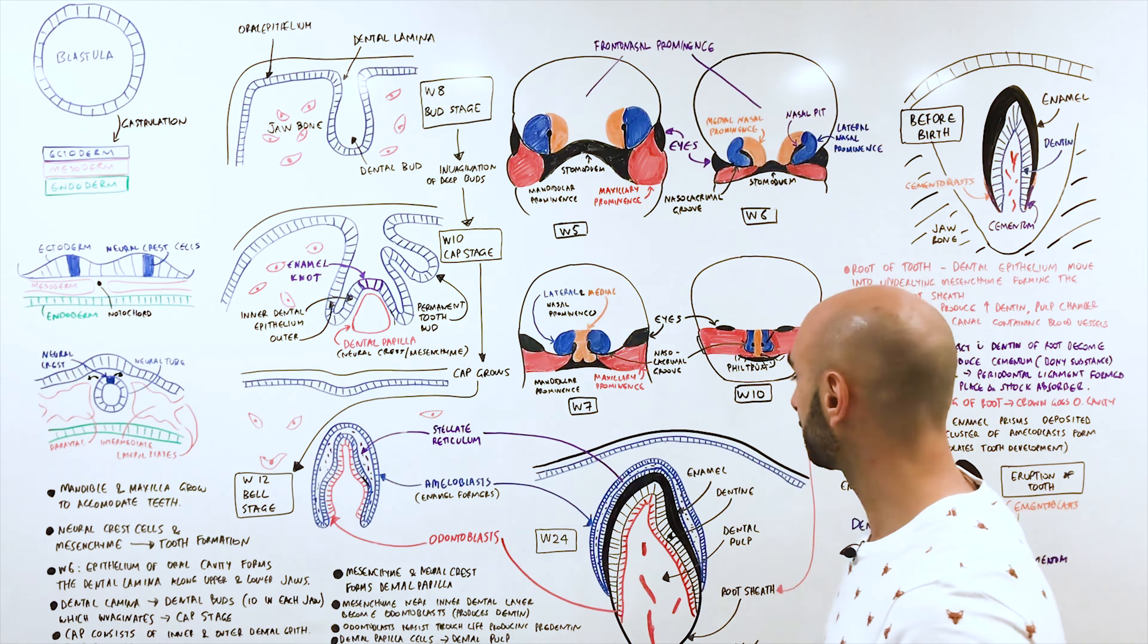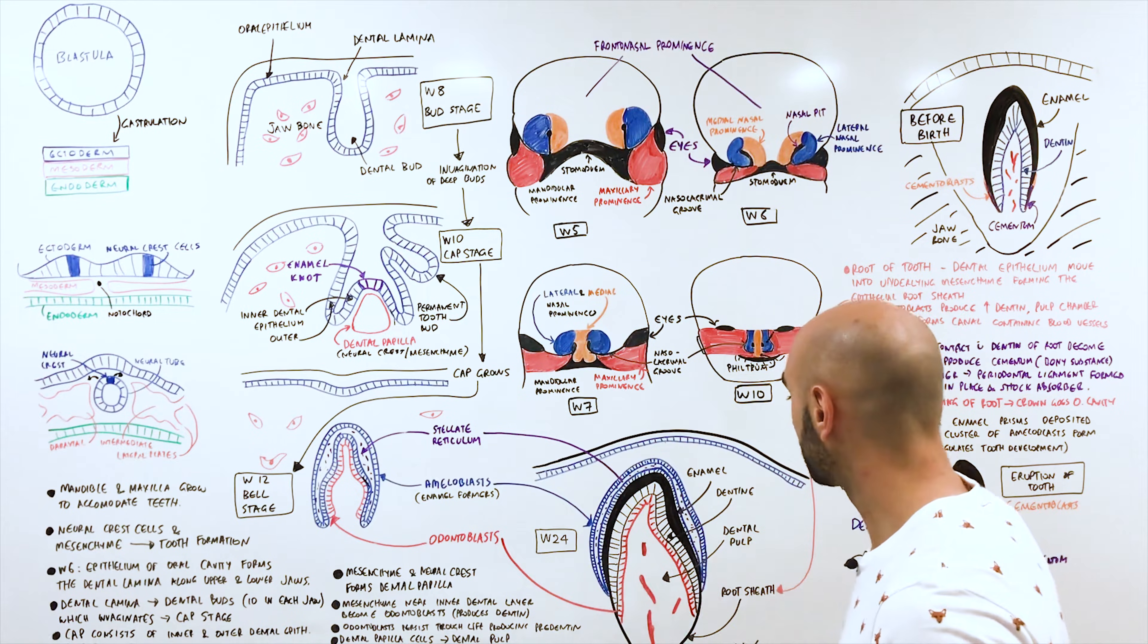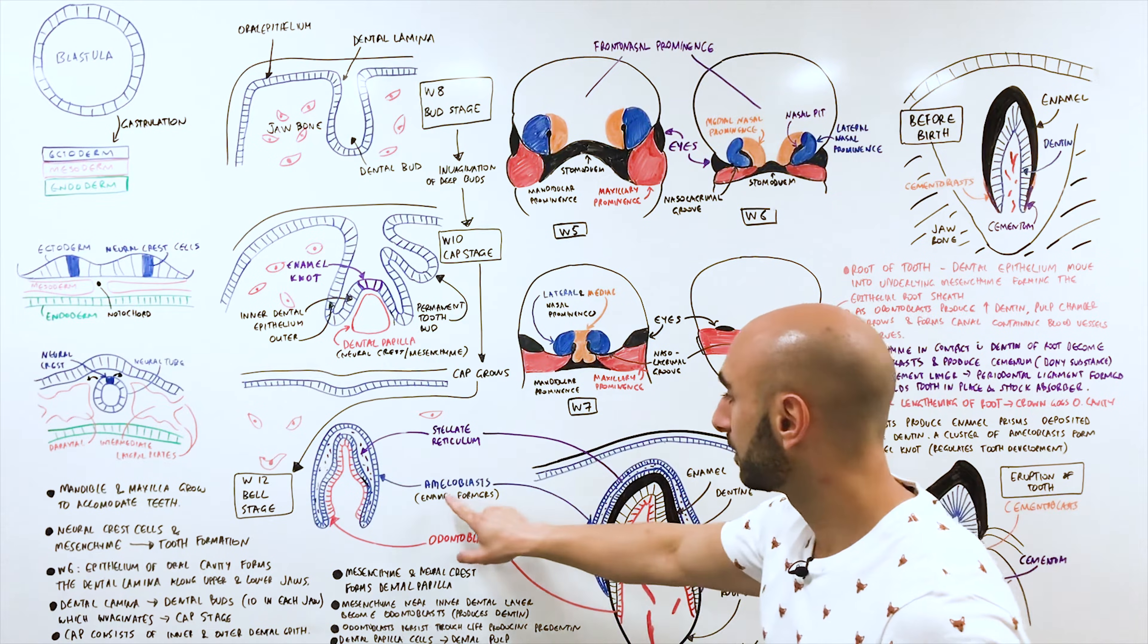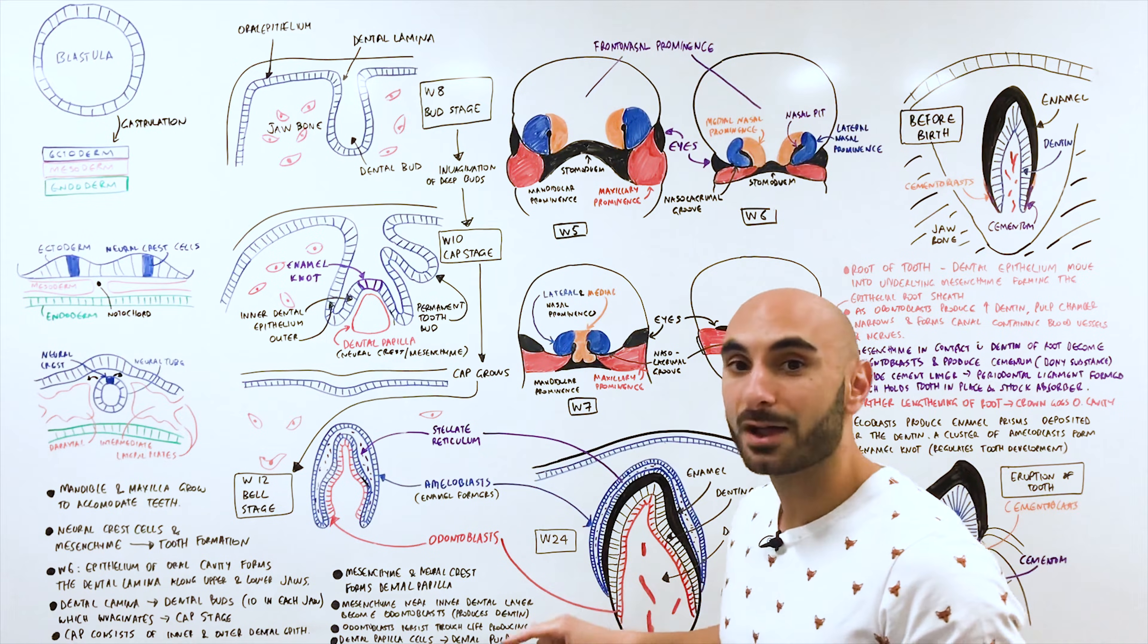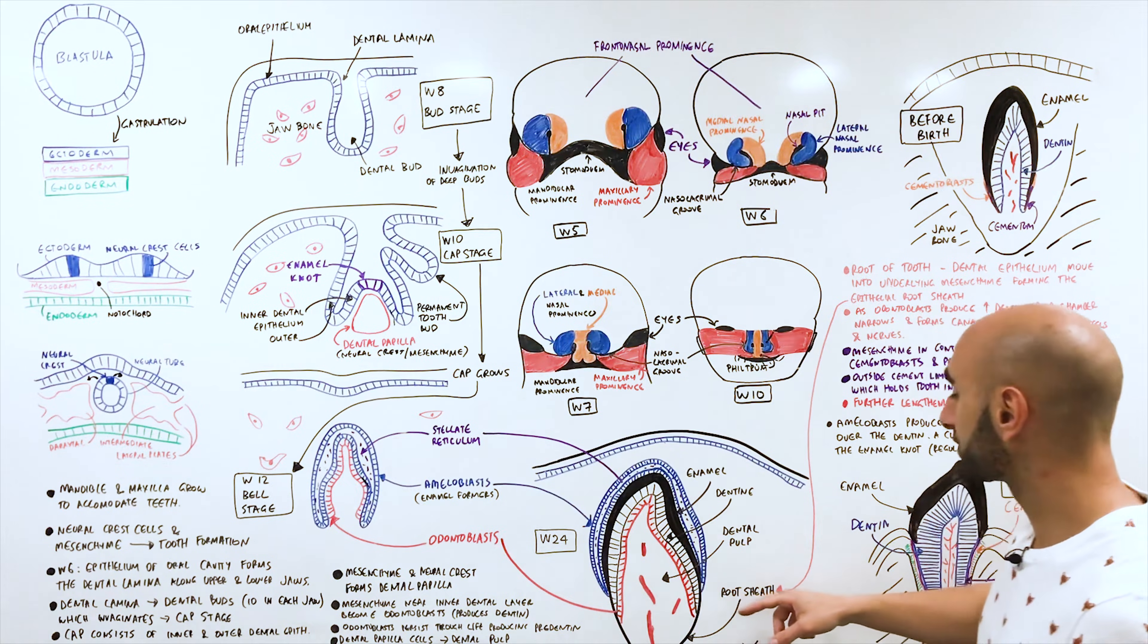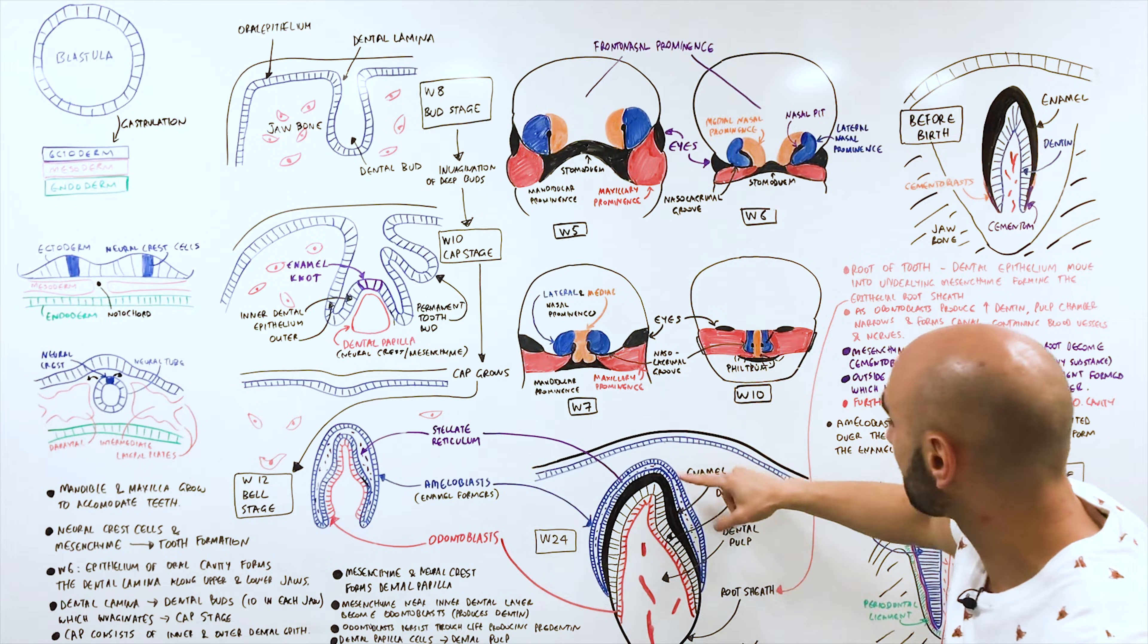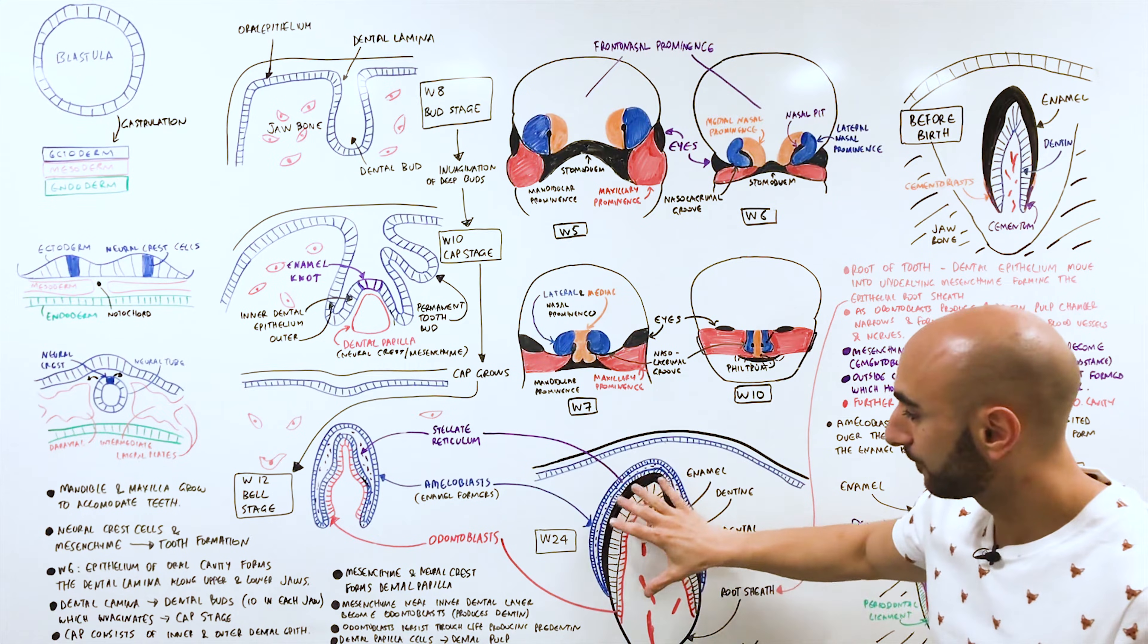That's all I wanted to talk about with the embryology of the face. From the bell stage we have now at four months, the tooth has still not erupted, the baby is not yet born, but we can see now that there is a thick layer of enamel that is the result of ameloblasts. In addition the dental pulp will start to be invaded by blood vessels. All the way in the bottom here we have the root sheath, which is the result of the underlying mesenchyme. The dental epithelium will move into the underlying mesenchyme forming the epithelial root sheath. This is at week 24.